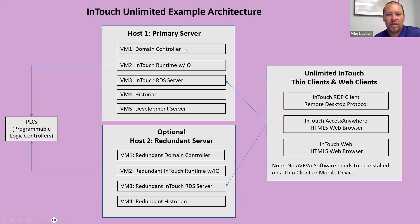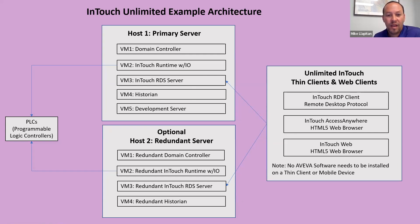All components except the domain controller can be consolidated onto a single computer — it's not a requirement to run multiple virtual machines. Windows 11 or a server operating system can be used. Optionally, you can add a redundant InTouch HMI Unlimited server for high availability. The primary server is $20,000 as a one-time perpetual license, and the redundant server is $10,000 — half the price — duplicating everything on the primary server.